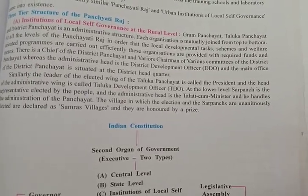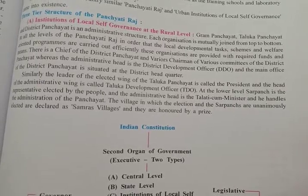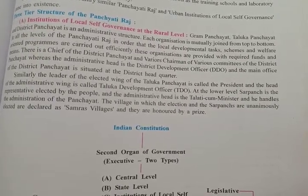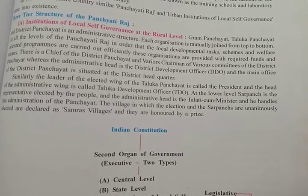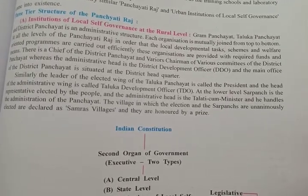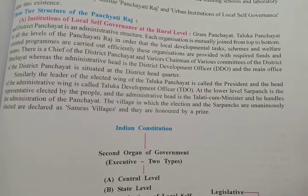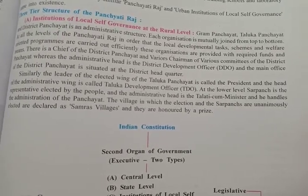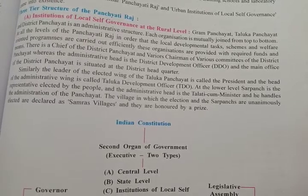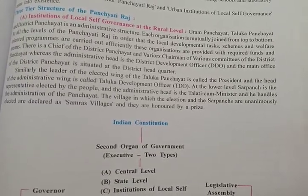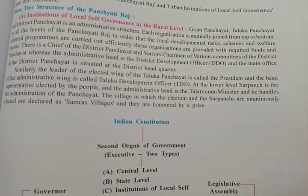There is the chief of the district panchayat, various chairmen of committees, the administrative head DDO (District Development Officer), and the main office of the district panchayat situated at district headquarters — so that administration in rural areas is properly carried out. Similarly, the elected wing leader is elected as president, and the head of the administrative wing is the taluka development officer. At the local level, we have the sarpanch, elected by people through voting, and the administrative head is the talati, who handles the administration work of the panchayat.